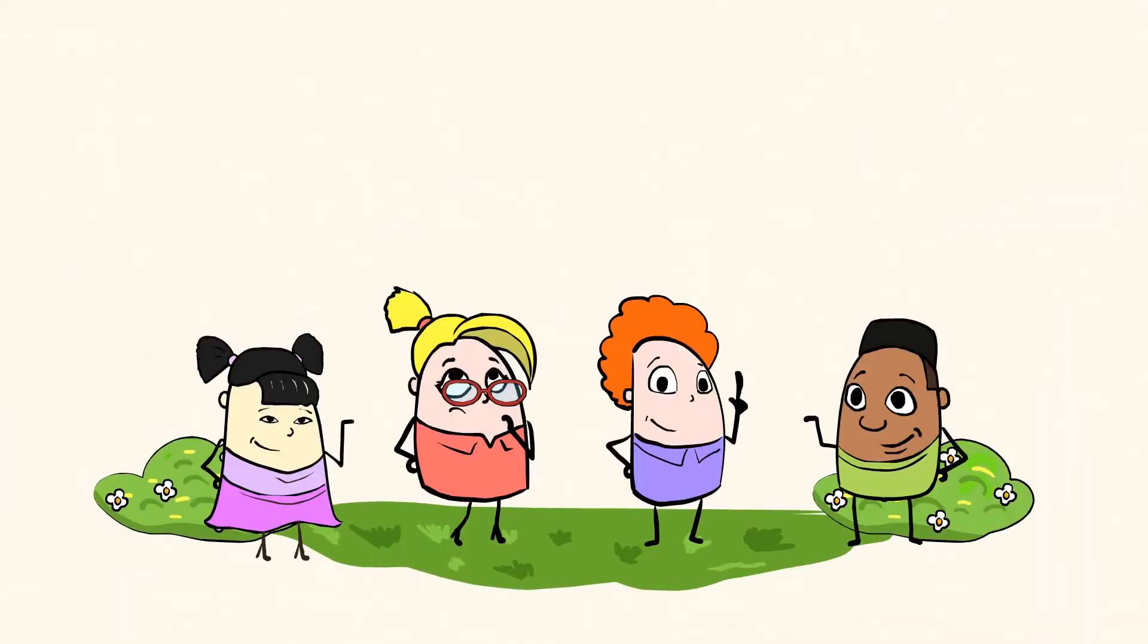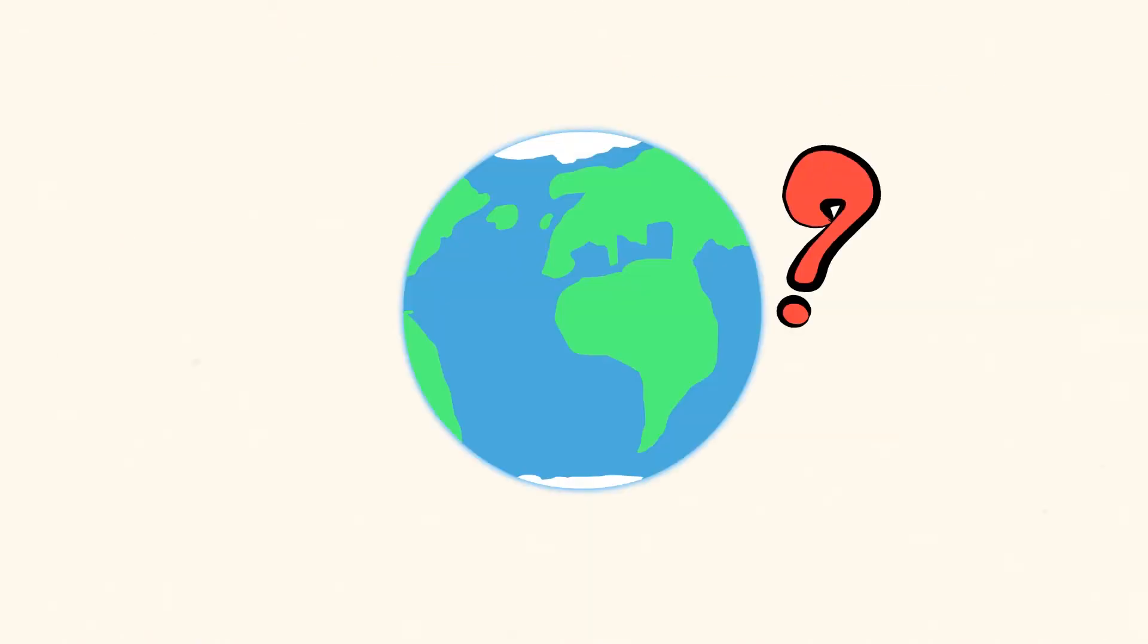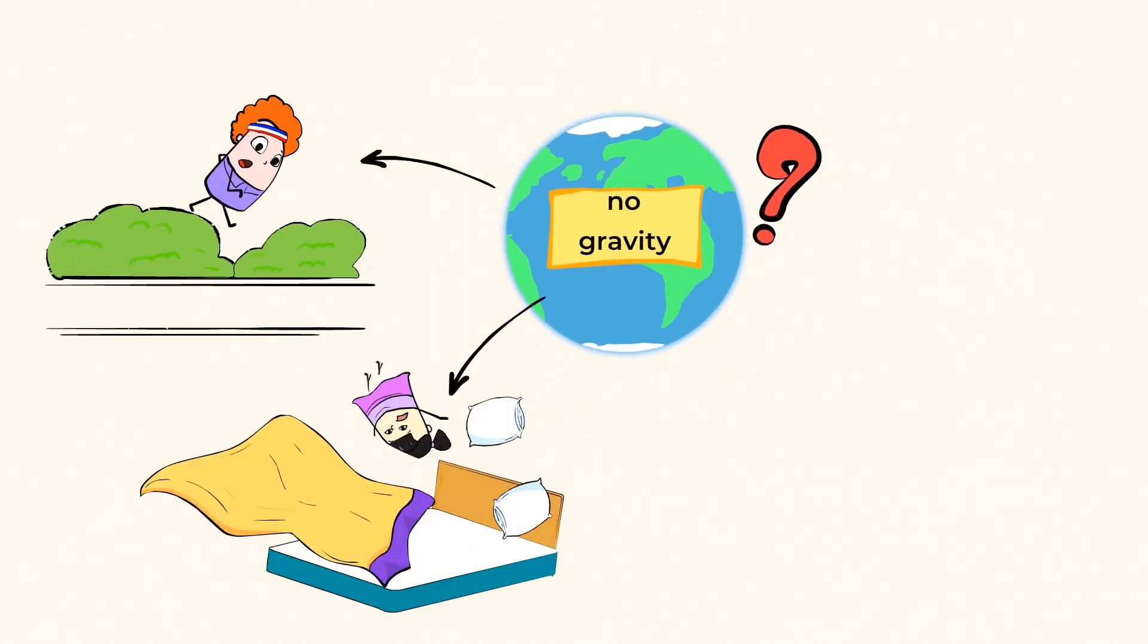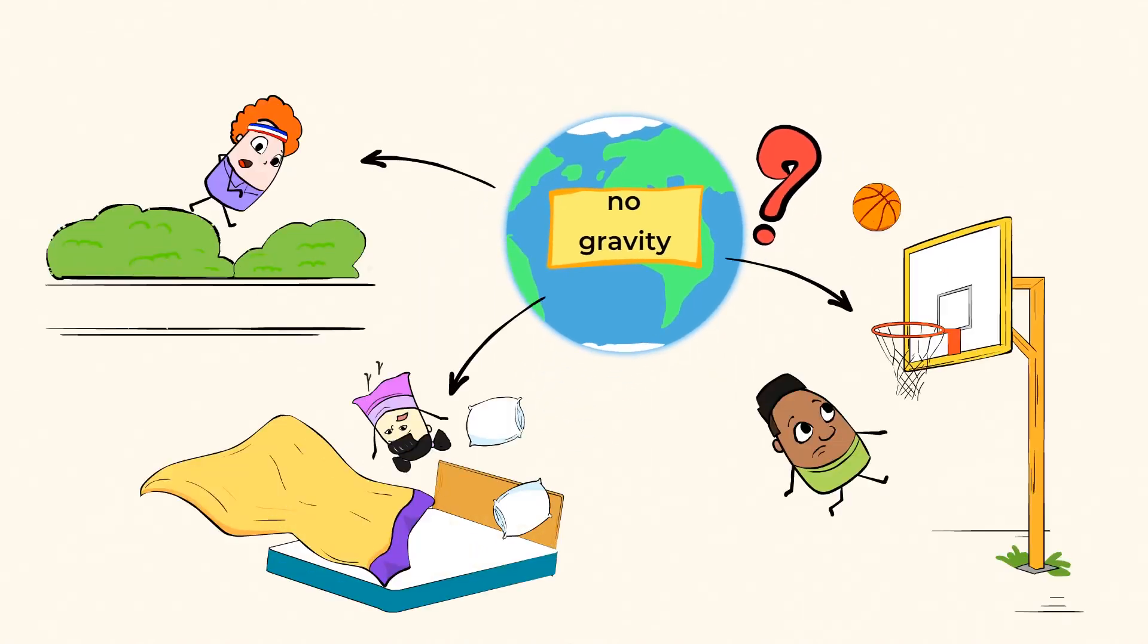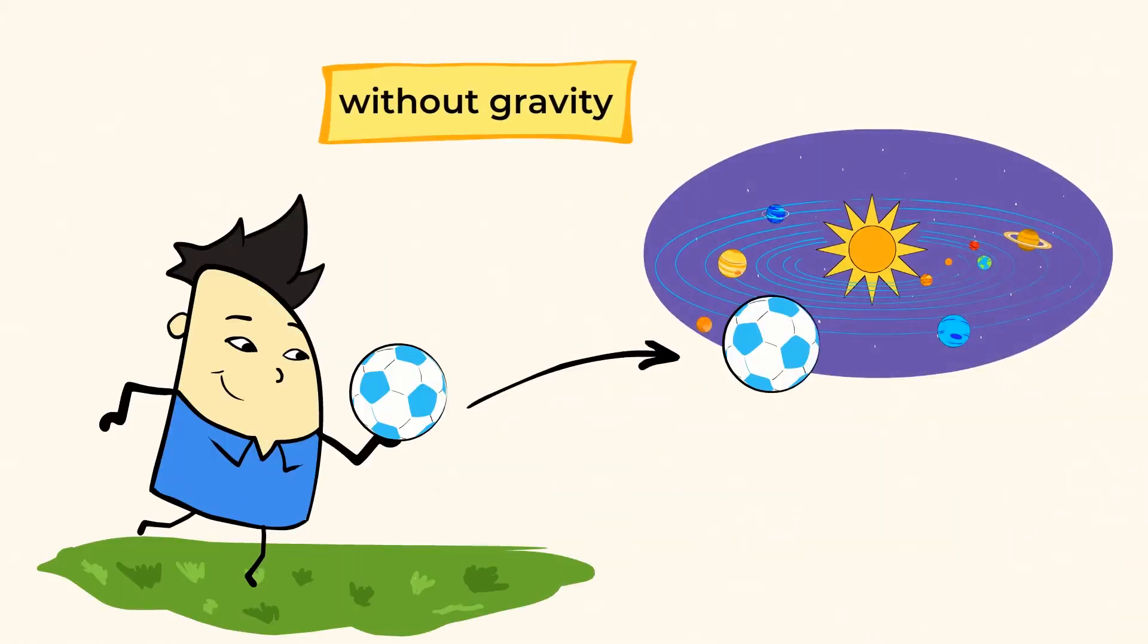So to sum up everything so far, gravity is a pulling force that keeps us on the ground. Without it, we would all be floating around in the air. Now that might sound great, but can you imagine if there was no gravity on earth? You wouldn't be able to run, lay in your bed, or even play basketball. Without gravity, if you kicked a ball, it would fly away in space and it would never come back.